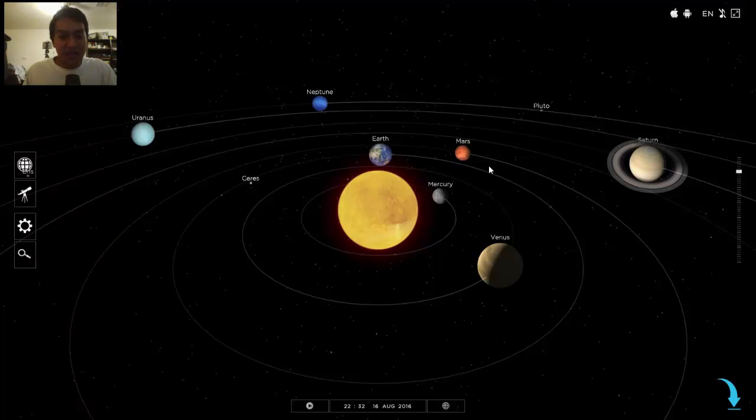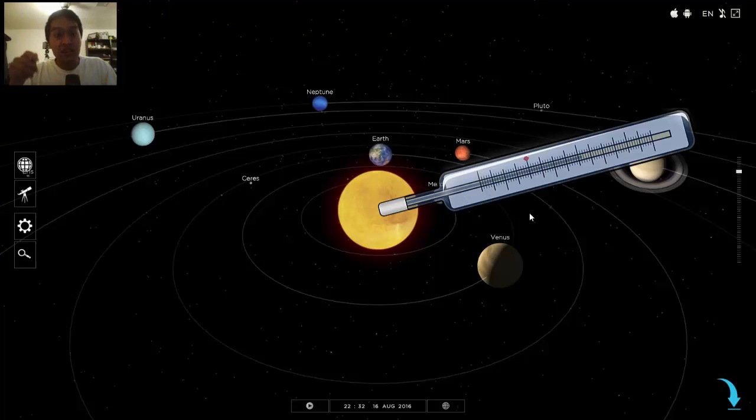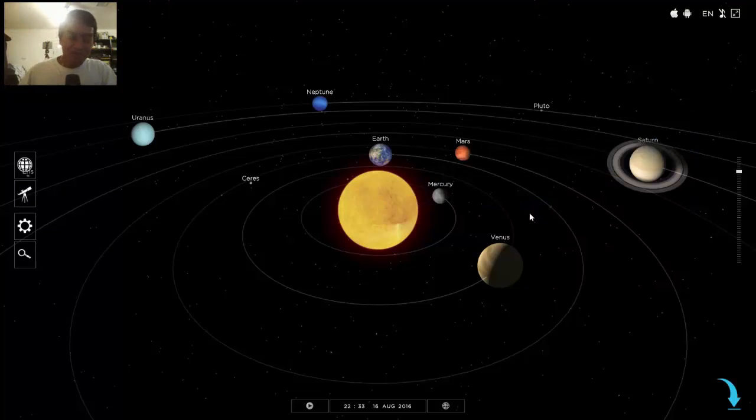The first planet is Mercury, and the setting I'm going to have is space—the empty vastness of space. Mercury makes me think of a thermometer because they used to have mercury in thermometers. I see the Sun with a thermometer sticking out of it, getting its temperature taken. The second planet is Venus.